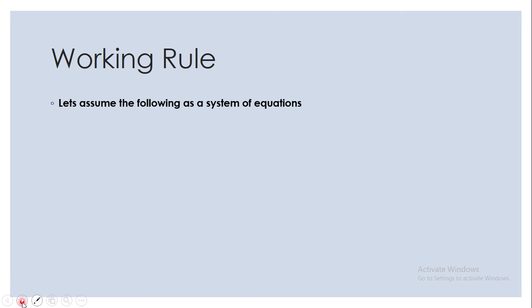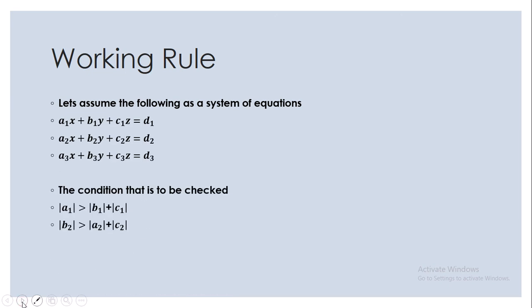The first two steps are almost the same as that of Jacobi's method. Assume a system of linear equations. There are three conditions to be checked: the coefficient a1 of x in the first equation should be greater than the sum of b1 and c1; b2 should be greater than the sum of a2 and c2; and c3 should be greater than the sum of a3 and b3. If the conditions are satisfied, you can carry out the iterations.